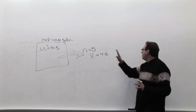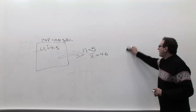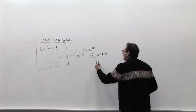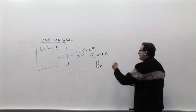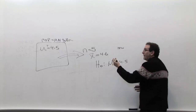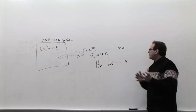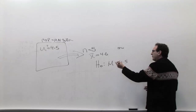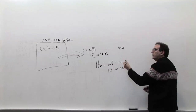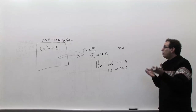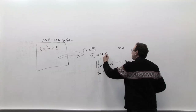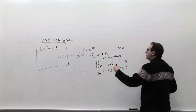Let me write this down in the right terminology. We express the two possibilities: the null hypothesis H0 is that mu equals 4.5 — the average truly is 4.5. The alternative hypothesis H1 (some books call it HA) is that mu does not equal 4.5. There are only two possibilities: either it's a perfectly good table, or it's not. That's why this whole chapter is called hypothesis testing — we're testing between two different hypotheses.